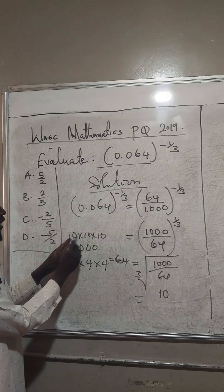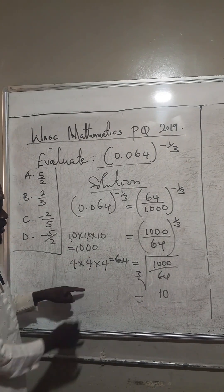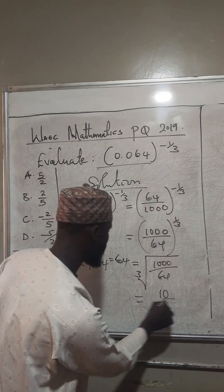So likewise here, 10 times 10 is 100. 100 times 10 is 1,000. So that is why we have 10.